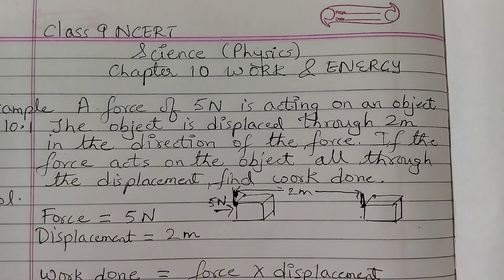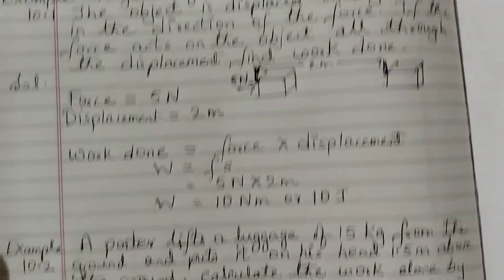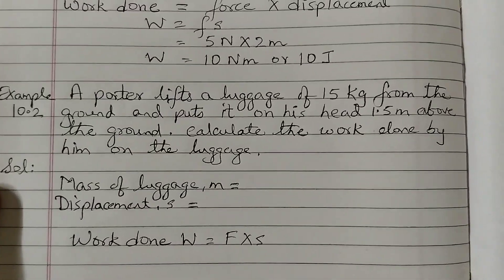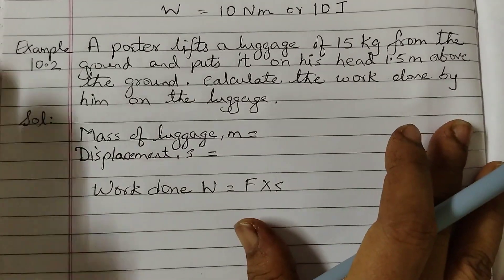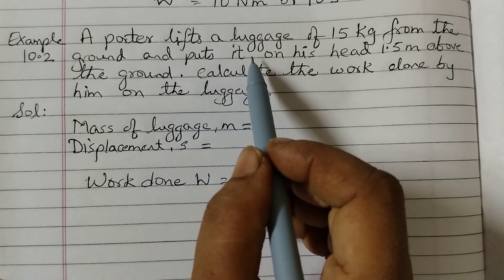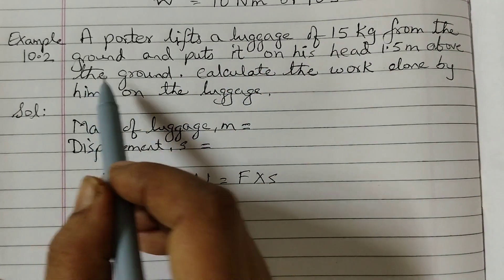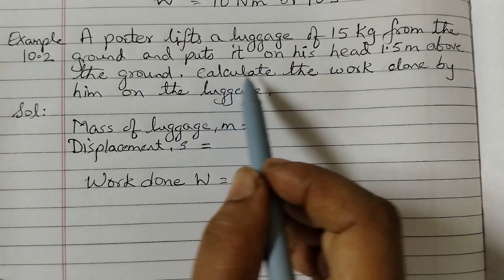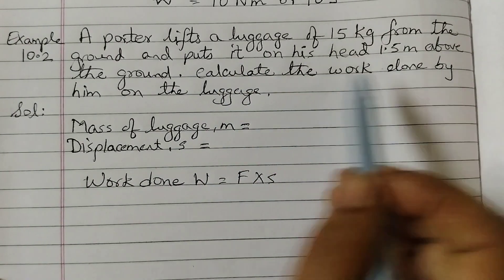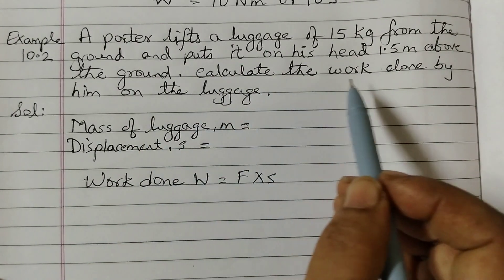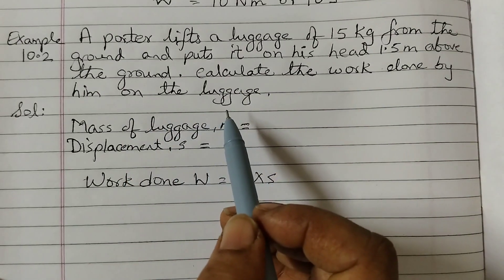In the previous class we did example number 1, and now example number 2 is: a porter lifts a luggage of 15 kg from the ground and puts it on his head 1.5 meters above the ground. Calculate the work done by him on the luggage.